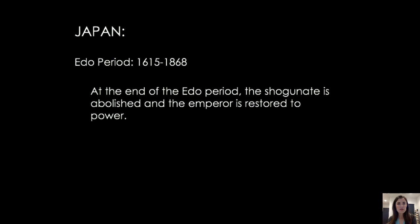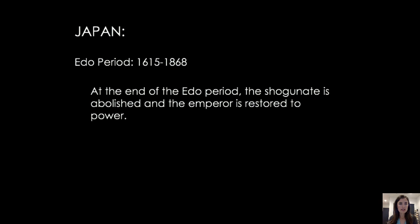Moving on to Japan for the remainder of the video, we'll be thinking about the Edo period, from 1615 to 1868. At the end of the Edo period, the shogunate is abolished and the Emperor is restored to power — a dramatic shift into the 19th century.